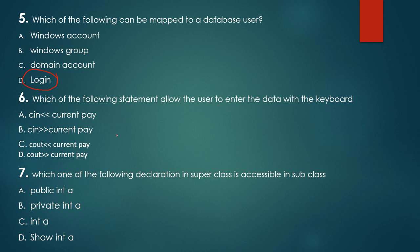Which of the following statements allows a user to enter data via the keyboard in C++? The user can see the information and the data is required to see the data. The correct answer is shown.